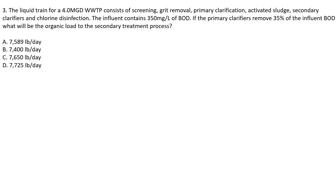Question three: the liquid train for a 4 MGD wastewater treatment plant consists of screening, grit removal, primary clarification, activated sludge, secondary clarifiers, and chlorine disinfection. The influent contains 350 milligrams per liter of BOD. If the primary clarifier removes 35% of the influent BOD, what will be the organic load to the secondary treatment process? A) 7,589 pounds per day, B) 7,400 pounds per day, C) 7,650 pounds per day, or D) 7,725 pounds per day.